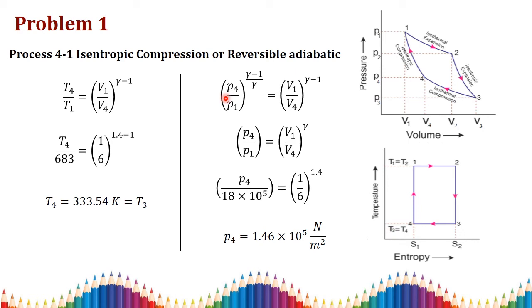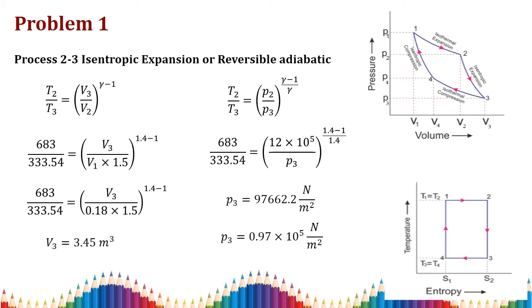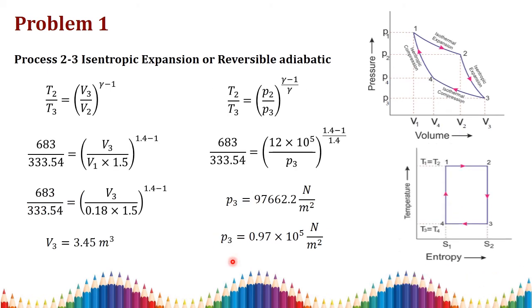Equating pressure and volume for process 4 to 1: p4/p1 = (v1/v4)^γ. Cancelling (γ-1) terms and substituting all values, we get p4 = 1.46 × 10⁵ N/m².